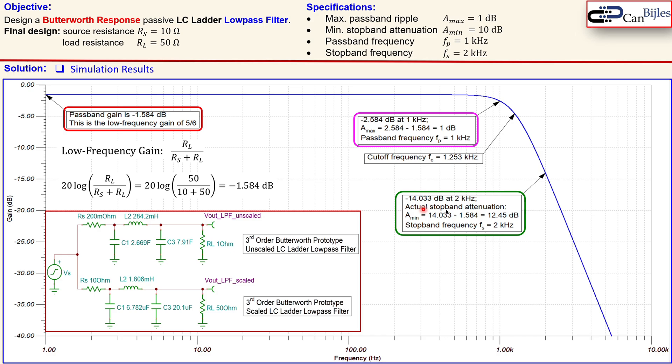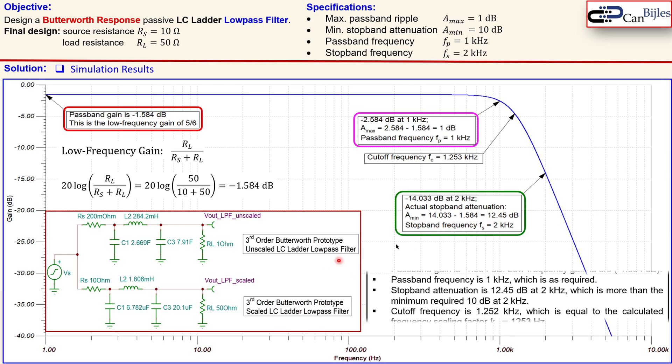The next one is about the actual stopband attenuation. This is the minimum required, so we need 10 dB. Now going again from this baseline down at two kilohertz, we'll see a value of minus 14.033 dB, so we go down by 12.45 dB, so at least 10 dB, so this is also achieved. In summary, we met our design objectives for this circuit.